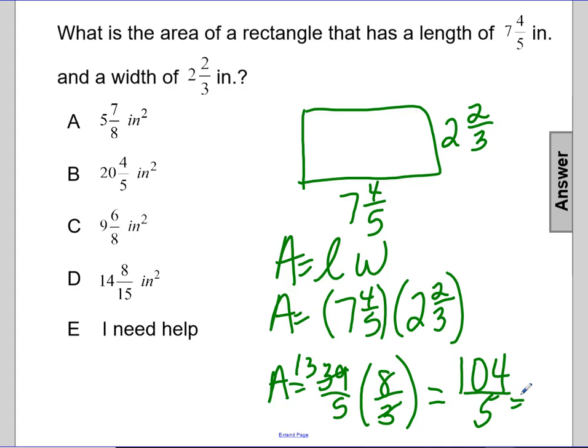And back to mixed number, that ends up being twenty and four-fifths. My correct answer is twenty and four-fifths inches squared.